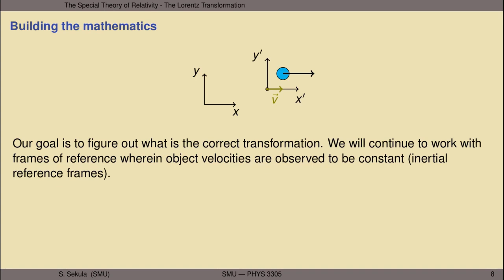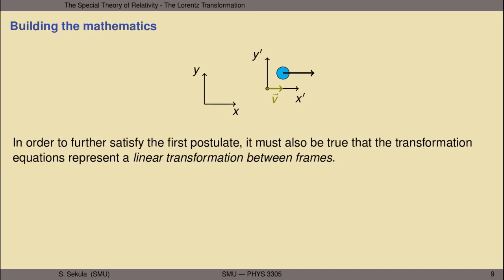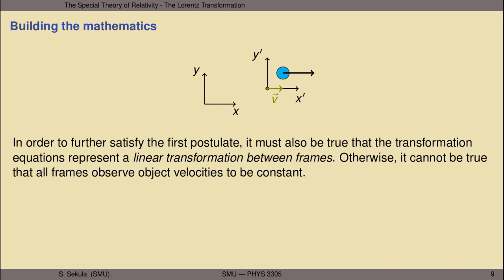In two inertial reference frames S and S prime, the object in motion will be observed in either frame to have a constant velocity. So x in frame S equals the object velocity times time, and x prime in frame S prime equals U prime times t prime. In order to satisfy the first postulate of special relativity, it must also be true that the transformation equations represent a linear transformation between the frames. Otherwise it can't be true that all frames observe object velocities to be constant. Let me demonstrate this.